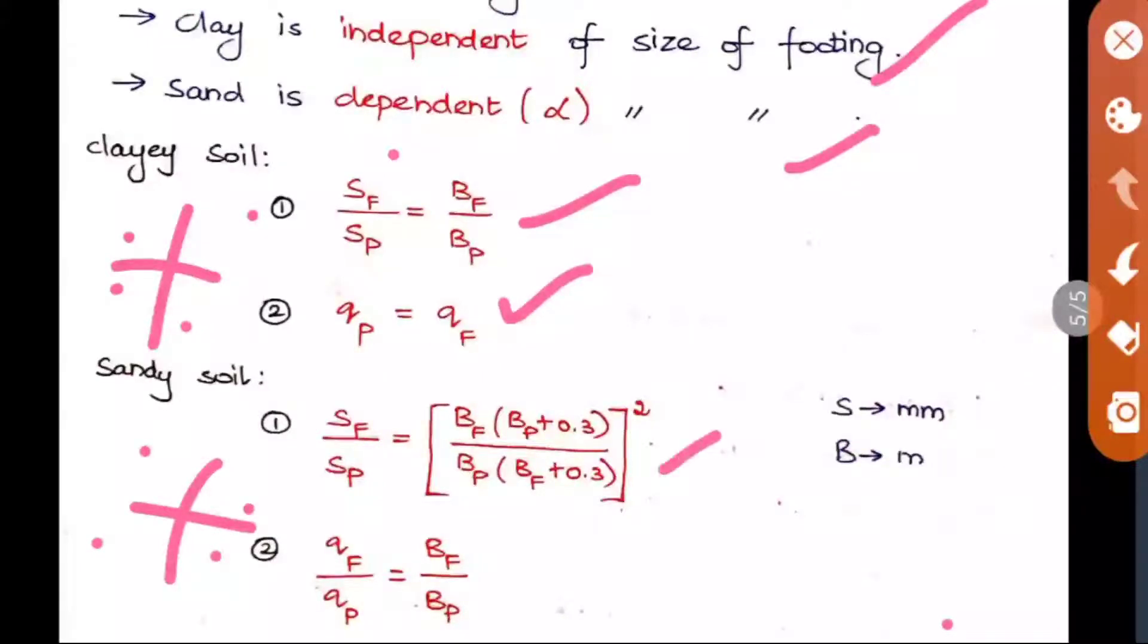Next is the sandy soil. In sandy soil it is somewhat big formula: SF by SP is equal to BF into (BP plus 0.3) by BP into (BF plus 0.3) the whole square. And Q also, here QF by QP will be equal to BF by BQ. This is the formula. Here S should be always in mm and B should be always in meter. You shouldn't convert meter to mm because anyway this is going to be a ratio only, because numerator and denominator is going to get cancelled. But as per the norms, you should not change B into mm; you should keep it in meter and settlement as mm only.